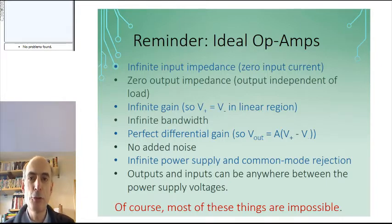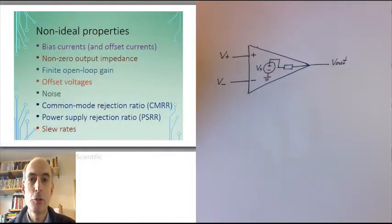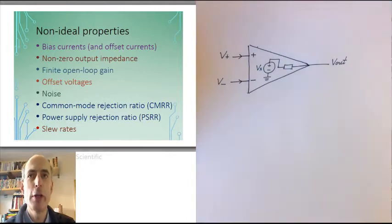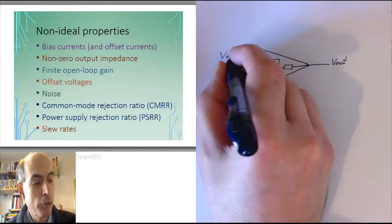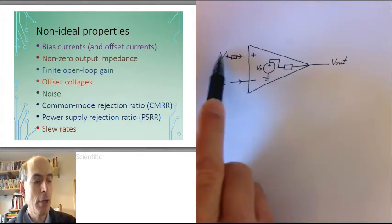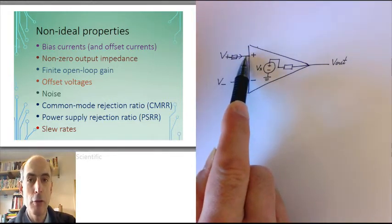Now, real op-amps do not behave like this. For a real op-amp, there is a small amount of current flowing into the inputs of an op-amp. So if you had a resistor between the input and the op-amp, the voltage at this point here is not equal to the voltage on the pin of the op-amp.